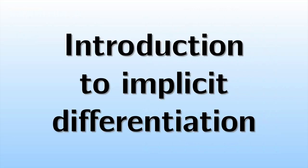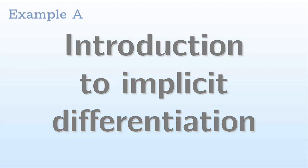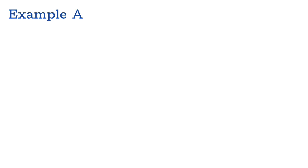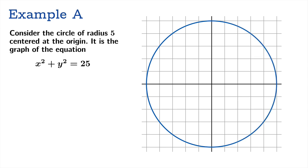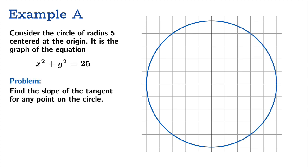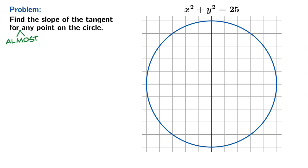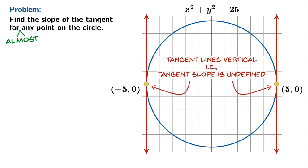In this video we're going to look at implicit differentiation. Example A: consider the circle of radius 5 centered at the origin — the graph of x² + y² = 25. Our problem is to find the slope of the tangent for any point on the circle. There are two points where the tangent line is vertical, so the slope formula is undefined there. Setting those aside, we're going to find the tangent slope at any other point.